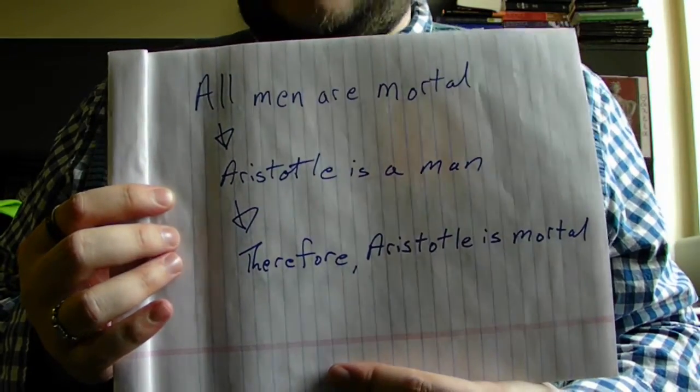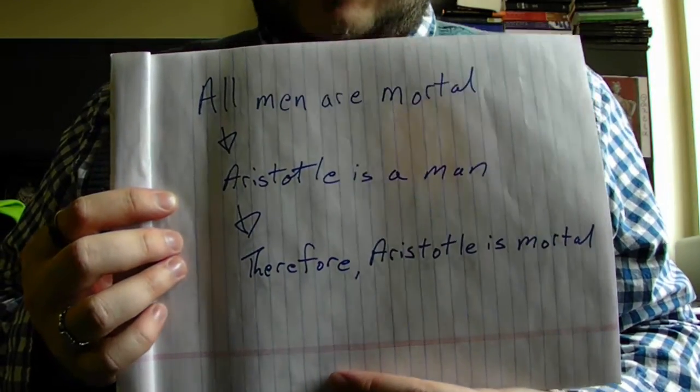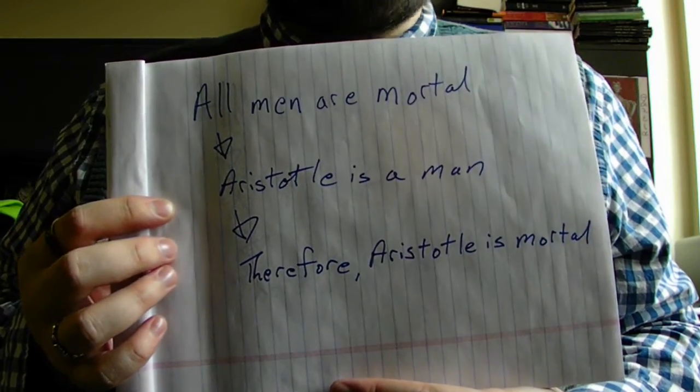We don't actually need to see Aristotle die in order to conclude that Aristotle must be mortal, because we've used this logical structure. One of the keys here is that in order for the syllogism to work logically, both the major premise and the minor premise have to be accepted as true. If we had some men who weren't mortal, then the premise would no longer be reliable, which would mean the conclusion would no longer be reliable.